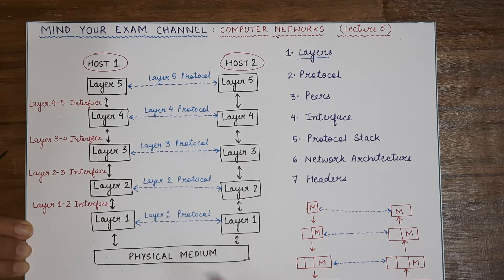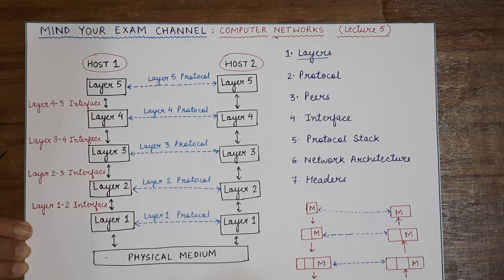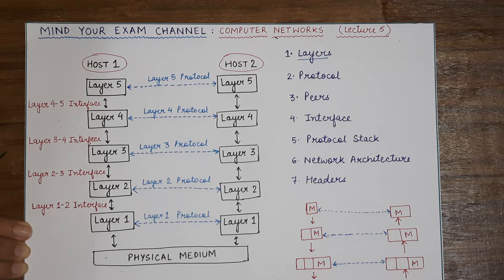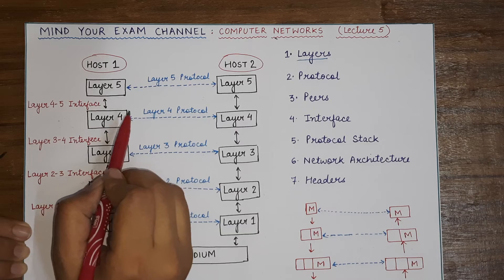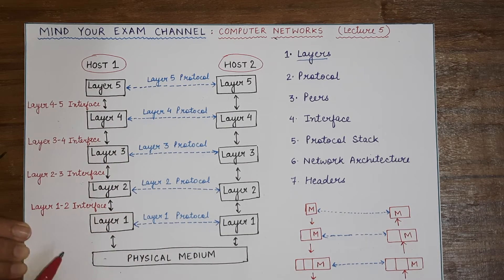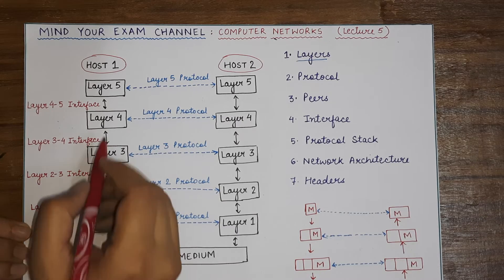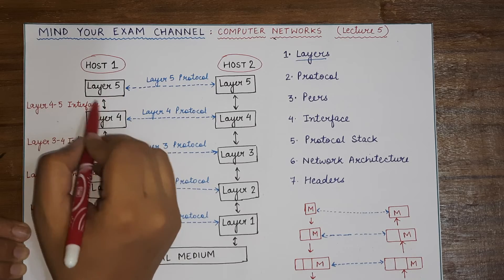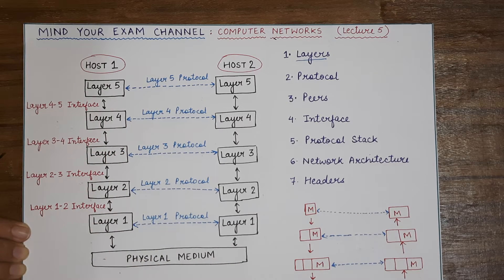Layers break down the entire task of communication into sub-functions such that each layer has a very clearly defined functionality for itself. The number of layers used by a network can vary depending upon the reference model or the network model that the network is following. We will study about these models in the next few classes, but irrespective of that, all models use multiple layers and each layer has a specific functionality defined for it.